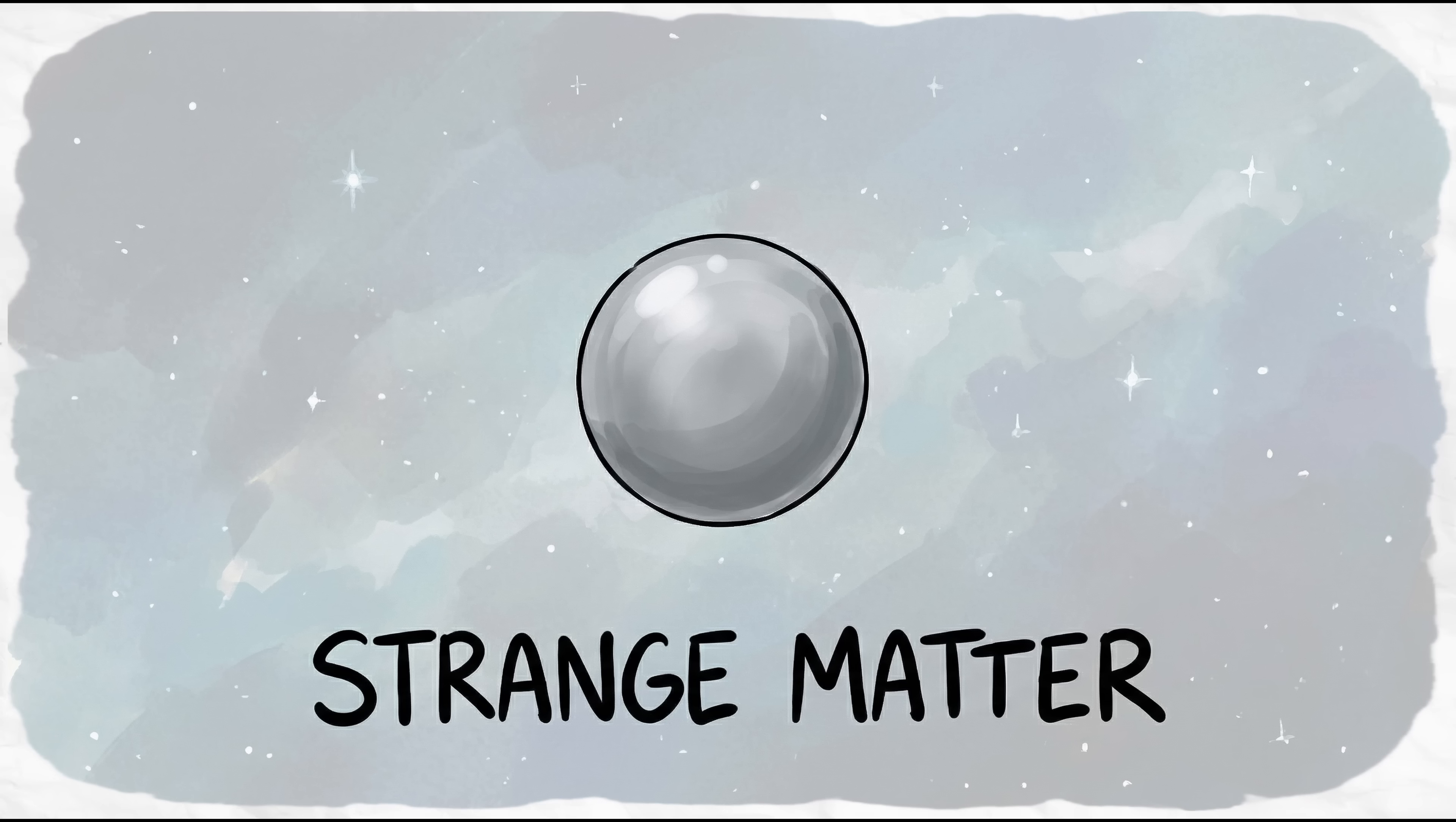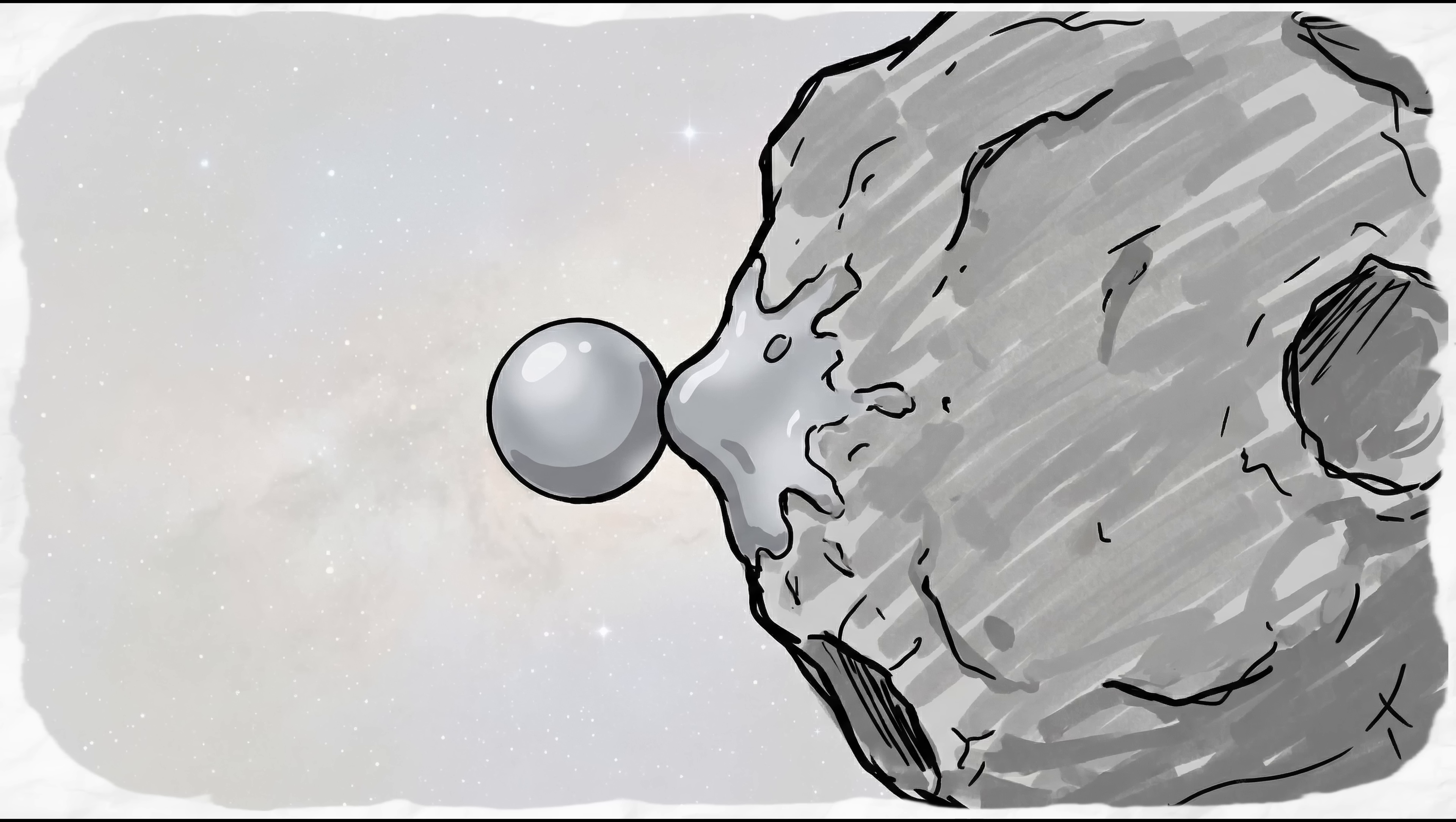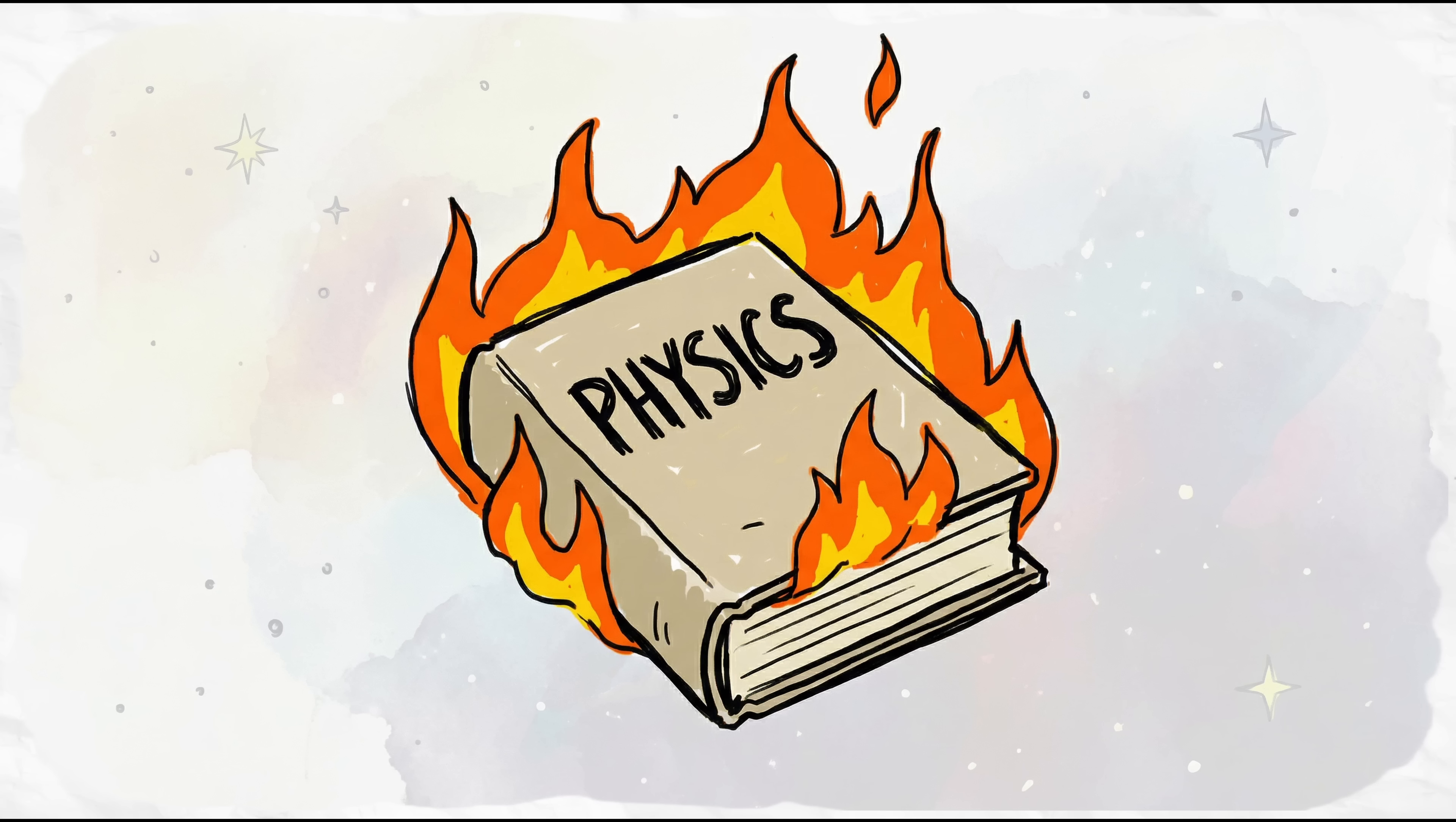But the most terrifying is strange matter. If certain neutron stars are actually strange stars made of quark matter, they are stable until they aren't. If such a star sheds even a single tiny speck known as a strangelet, it becomes a cosmic infection. It would force a chain reaction, causing every atom it touches to collapse into the perfect state of strange matter. If a strangelet hit Earth, the conversion would release so much energy that the planet would incinerate itself from the inside out, turning into a white-hot sphere of strange matter in a process that ignores every safety rule in the book.